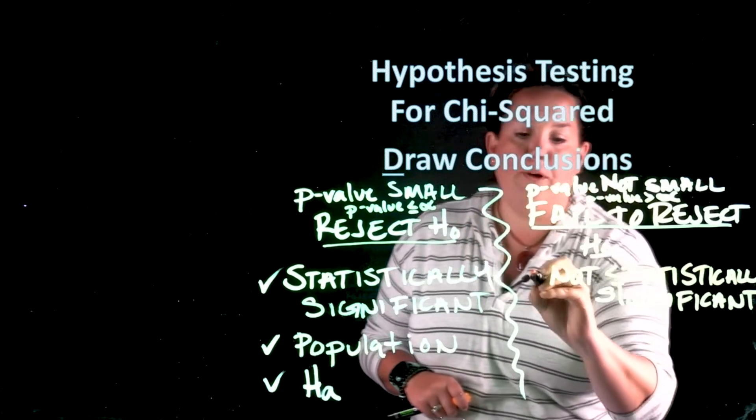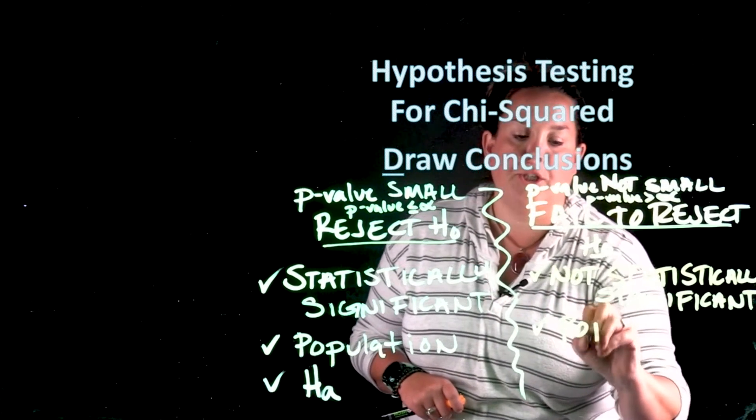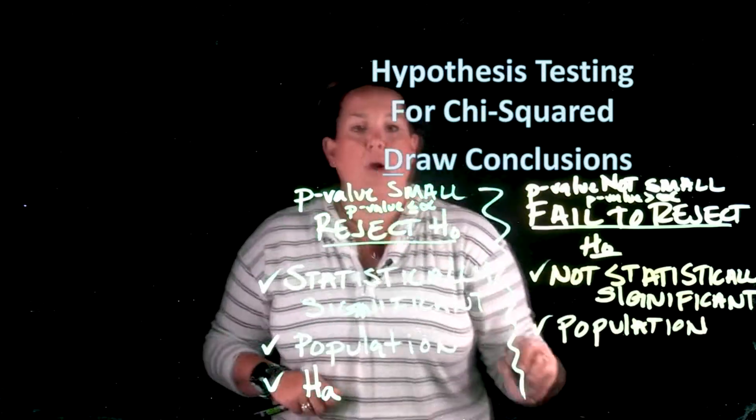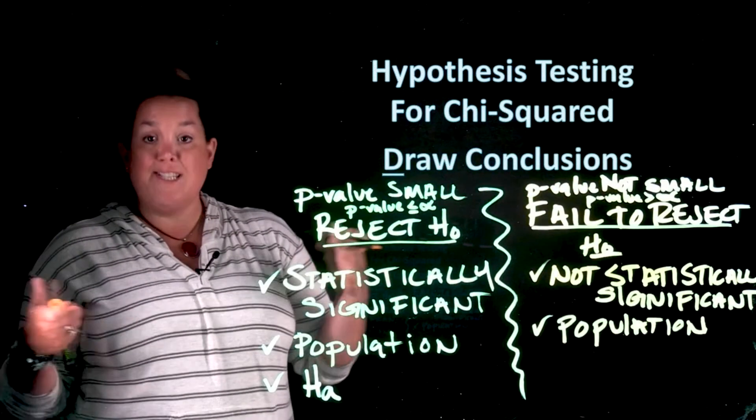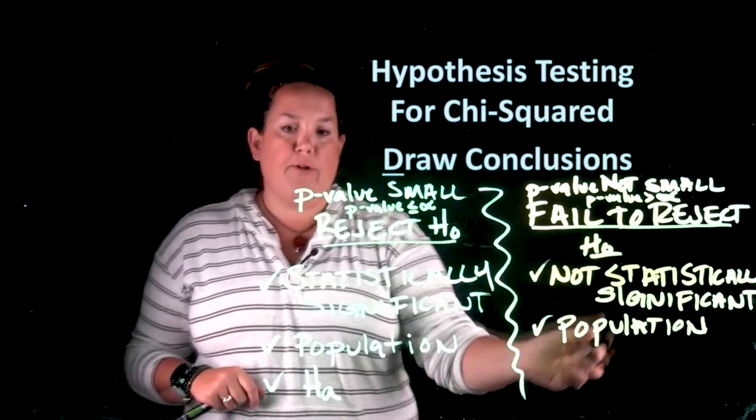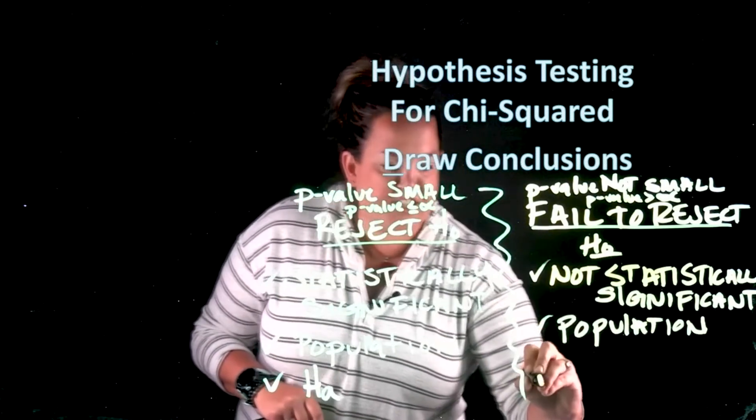And you always will say the population. So because these drawing conclusions are going to be talking about if you have evidence for this aspect of the parameter or population, you always refer to the population and you still will talk about your alternative.